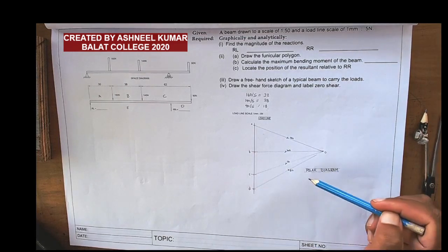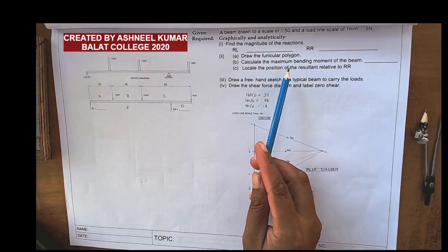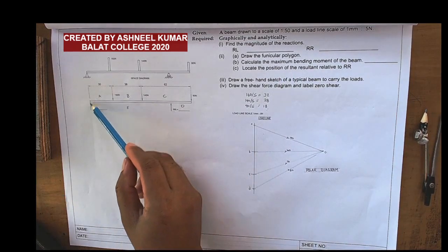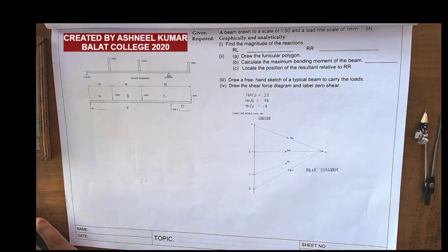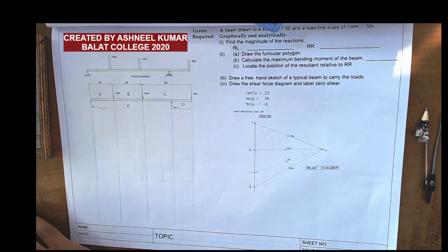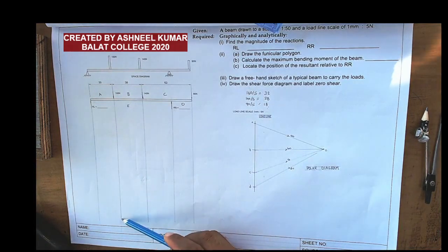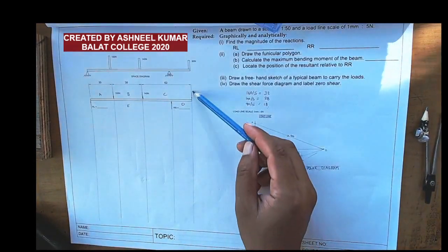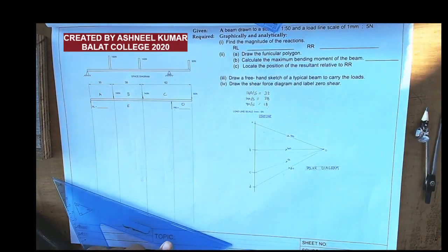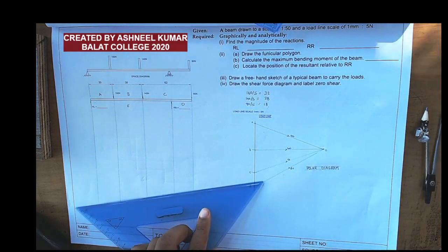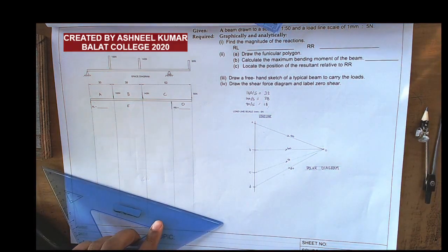After joining all the points to O, I get a polar diagram. The next step is to draw the funicular polygon. To draw the funicular polygon you have to take all the forces and the supports straight vertically down. I have taken RL, 160, 140, RR, and 90 newtons straight down. A-zero goes in space A, B-zero in space B, C-zero on CD, and then E-zero will be the closer.